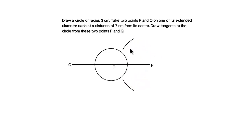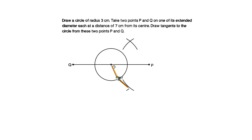Similarly, keep your compass at point O and draw an arc above and below line OP, intersecting with the previous arc. Now draw the perpendicular bisector for line OQ. Both lines are equal at 7 centimeters on both sides, so with the same compass measurement you can draw the perpendicular bisector.